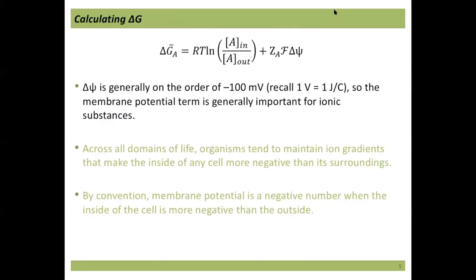For calculating delta G, there's a good example in the book. The potential in cells is generally on the order of about negative 100 millivolts — not enough to shock you, but generally important for ionic substances. The take-home message is that across all domains of life, organisms maintain ion gradients, and these ion gradients tend to make the inside of the cell more negative than its surroundings. By convention, membrane potential is a negative number when the inside of the cell is more negative than the outside.